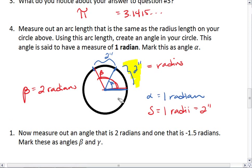We could also measure out 2 inches and then 1 more inch, giving me our angle gamma. Gamma is known to be negative 1.5 radians. So its angle cuts off an arc length that is going to be 3 inches or 1.5 radians long. But we're going in the clockwise direction, so this is considered a negative angle.